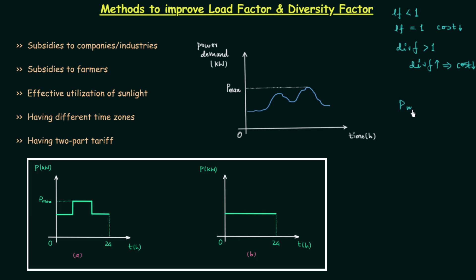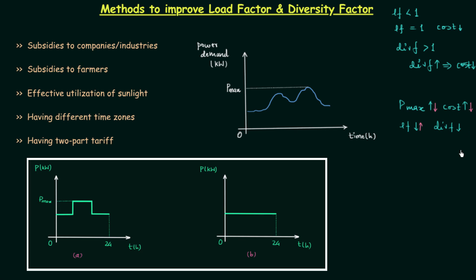When P_max — the maximum power demand — is higher, that is the peak load condition, the cost of electrical energy increases. And when P_max is higher, the load factor, which equals average power demand over maximum power demand, reduces. Diversity factor also reduces. If we think in the reverse manner, if we can increase the load factor then P_max will reduce and the cost of electrical energy will also reduce. The same applies to the diversity factor.